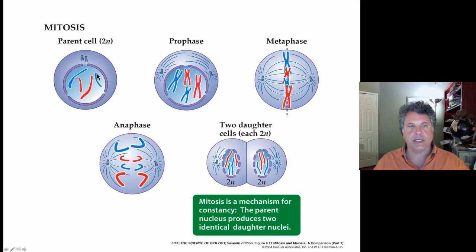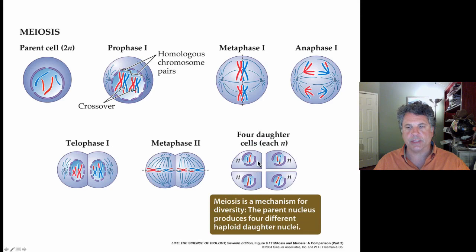In mitosis we end up with two daughter cells that are each 2N, each diploid. But in meiosis we end up with four daughter cells, each of which has a haploid complement of genetic material. You need to practice this and understand the behavior of chromosomes during meiosis. This will be very important as we tackle transmission genetics.